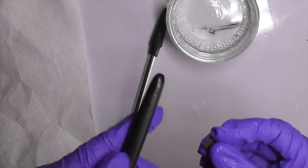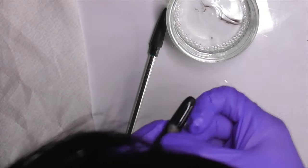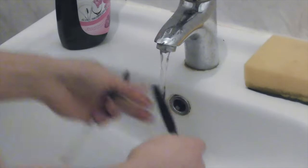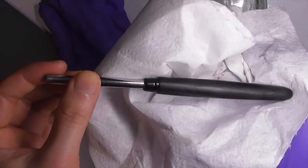After it is cured, wet sand the surface to smooth using 1200 grit sandpaper. Clean it with a cloth and check it with your finger. The surface should be perfectly smooth to touch. Wash the pen with water and dry it.